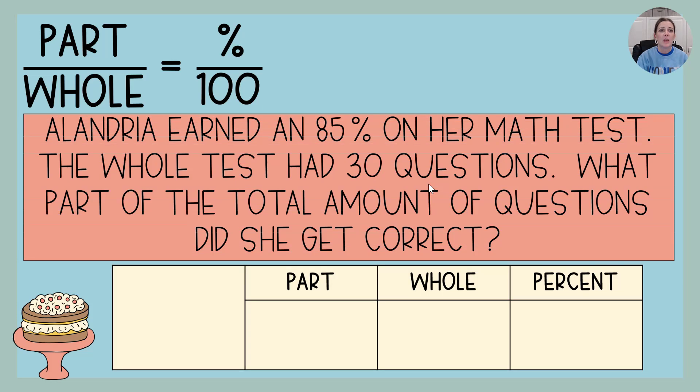All right, another one. Alandria earned an 85% on her math test. Way to go, Alandria. The whole test had 30 questions. What part of the total amount of questions did she get correct? Again, something's going to be missing. So we need the part. What part did she answer correct? You got it. That's our unknown. That's what it's asking. We don't know.